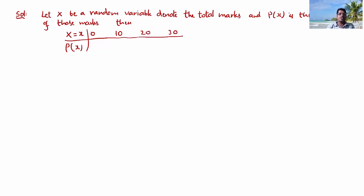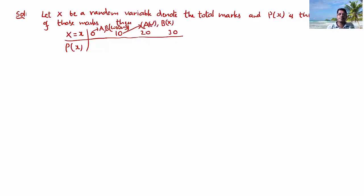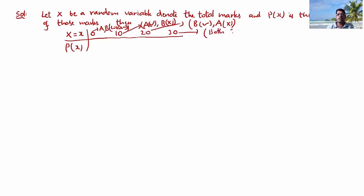For getting 0 marks: both A and B are wrong. For getting 10 marks: A is correct, B is wrong. For getting 20 marks: B is attempted first and correct, A is next and wrong. For getting 30 marks: both are correct in whatever order — that is 10 plus 20 = 30.